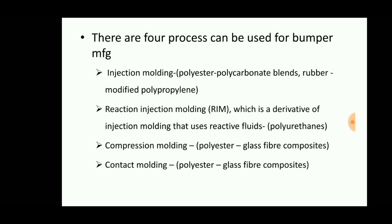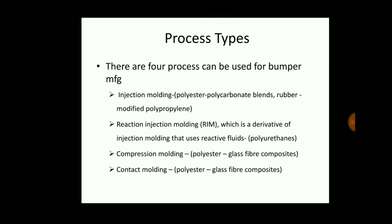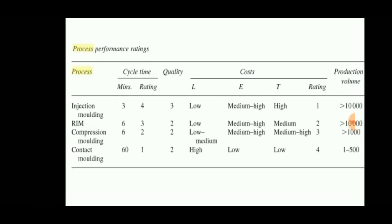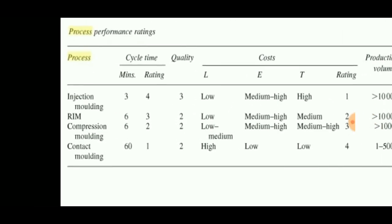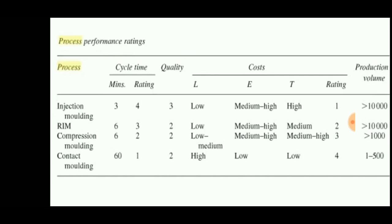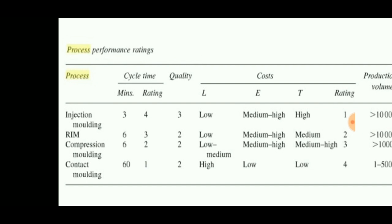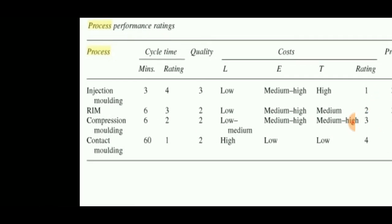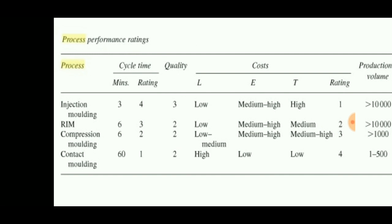In terms of performance, the injection molding process is a somewhat better method than the others because the cycle time — the production time of the bumper — is less. It takes only three minutes for manufacturing. However, the rating is somewhat lower because when manufacturing a product in a short period, there may be some quality or functional issues.